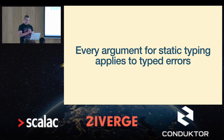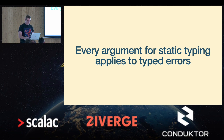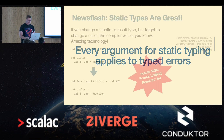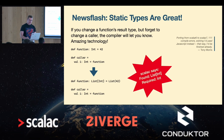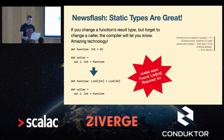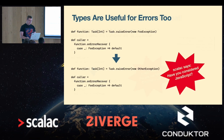Because errors, in functional programming at least, are just values that describe the state of the program. You can manipulate them using normal FP tools. The main difference between an error and a success is that when you have an error, you want to short-circuit. So errors can have types. And static types are great — if you make a mistake, the compiler will pinpoint exactly where it is.